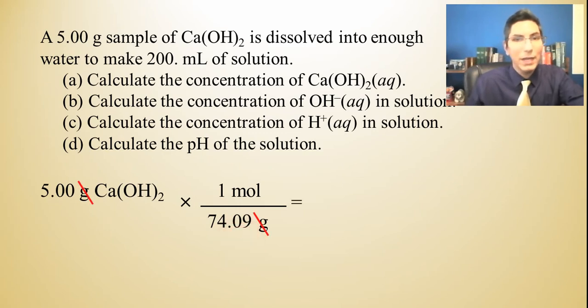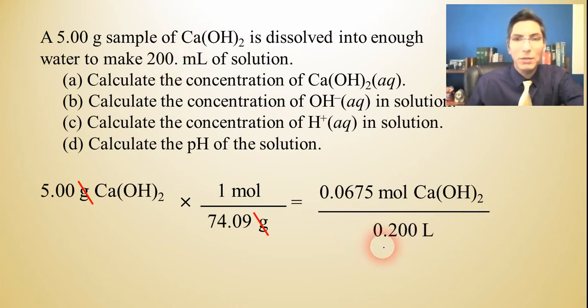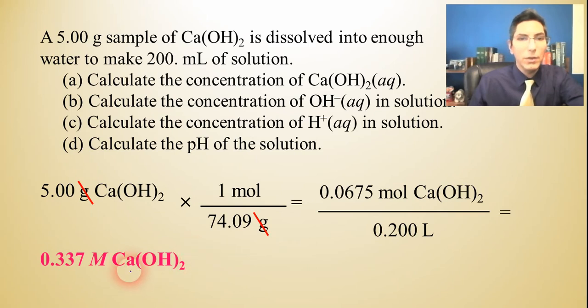When I cancel grams and divide, I get that there are 0.0675 moles of calcium hydroxide. Now concentration is moles per liter. So how many liters of solution do we have? Well, 200 milliliters is the same as 0.2 liters. So we divide by 0.2 liters, and the molarity of calcium hydroxide, our answer to part A, is about 0.337 molar.